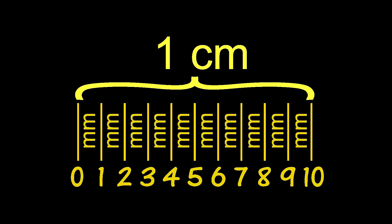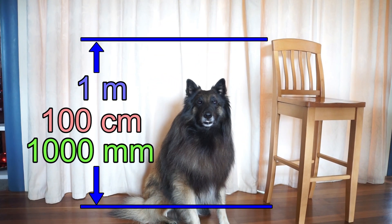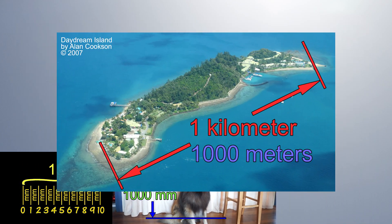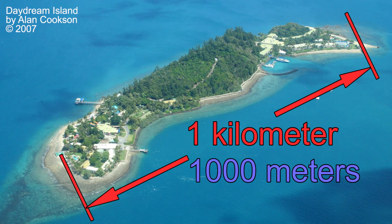Summary: 1 centimeter equals 10 millimeters. 1 meter equals 100 centimeters. 1 kilometer equals 1,000 meters.